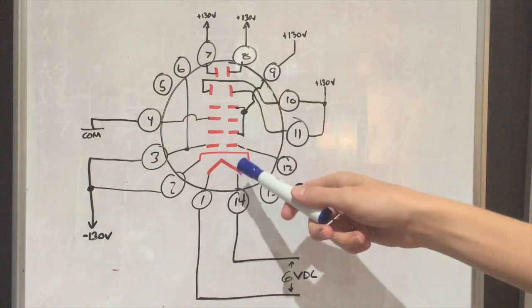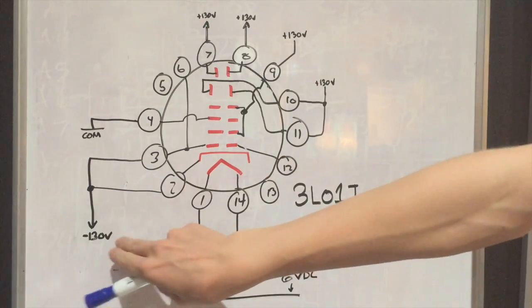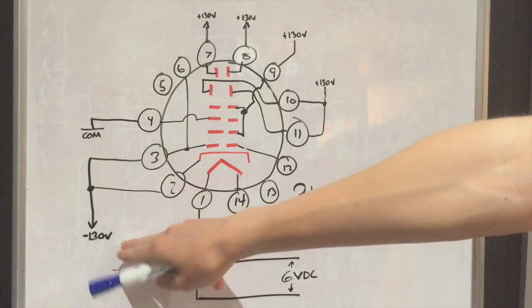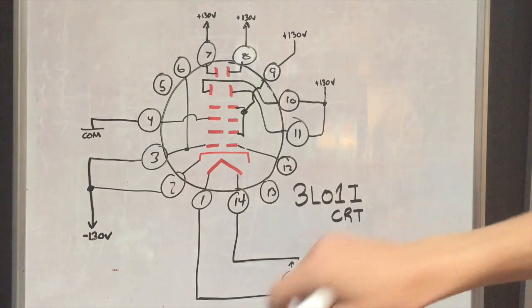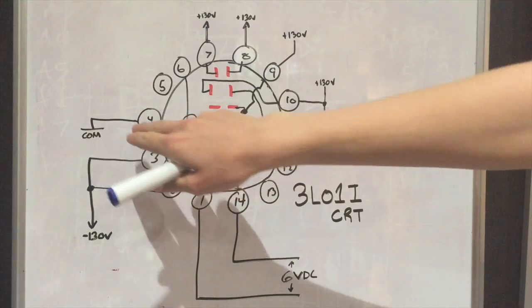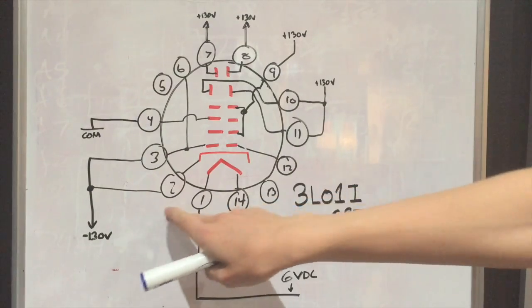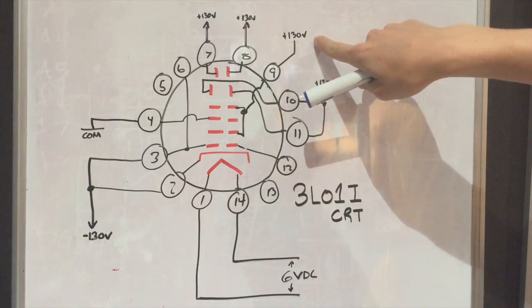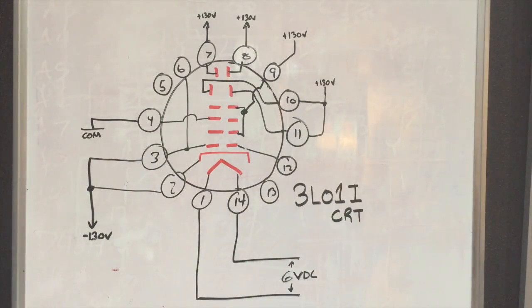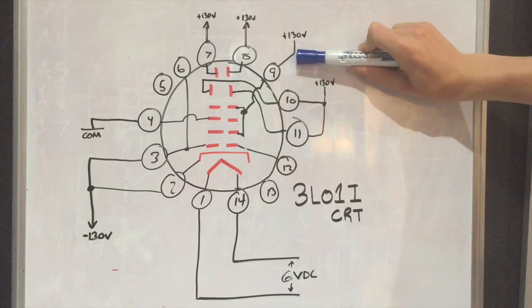So then going to the next pin, the cathode as well as the control grid, pins 2 and 3, I've connected them to the negative 130 volt supply from the voltage multiplier. That way I can have the lowest potential on them as possible. Then coming over to anode 1, we've connected that to common, so that'll be about 130 volts higher than the cathode. And then anode 2 will be connected via pin 9 to the 130 volt supply. So there'll be a 260 volt potential between the cathode and the second anode.